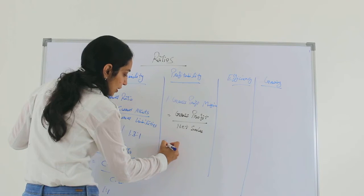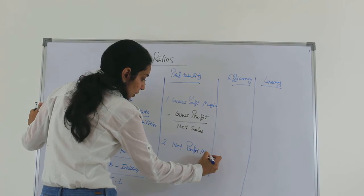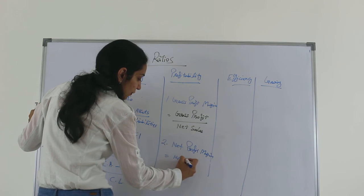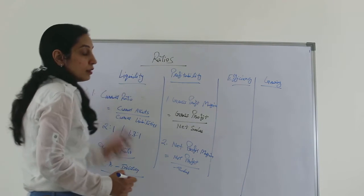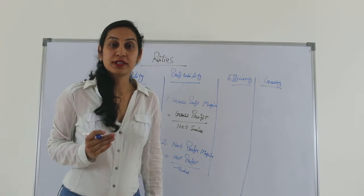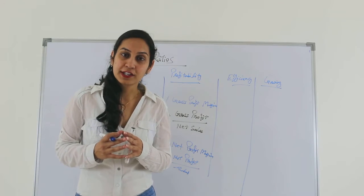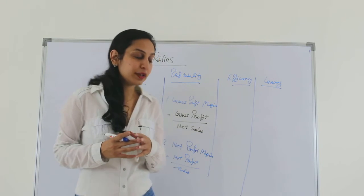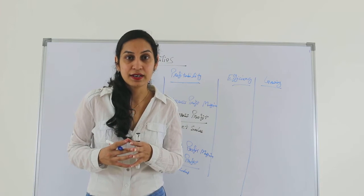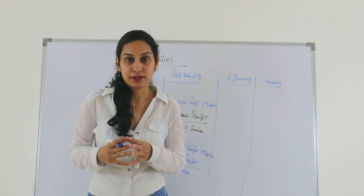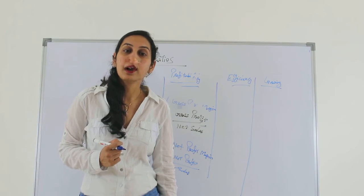The second profitability ratio is net profit margin. The net profit margin equals net profit divided by sale. This ratio tells us how much is the final profit the company has over its sale. Once we deduct all other expenses beyond production from gross profit, we are left with net profit. The percentage of net profit over sale gives us the net profit margin.